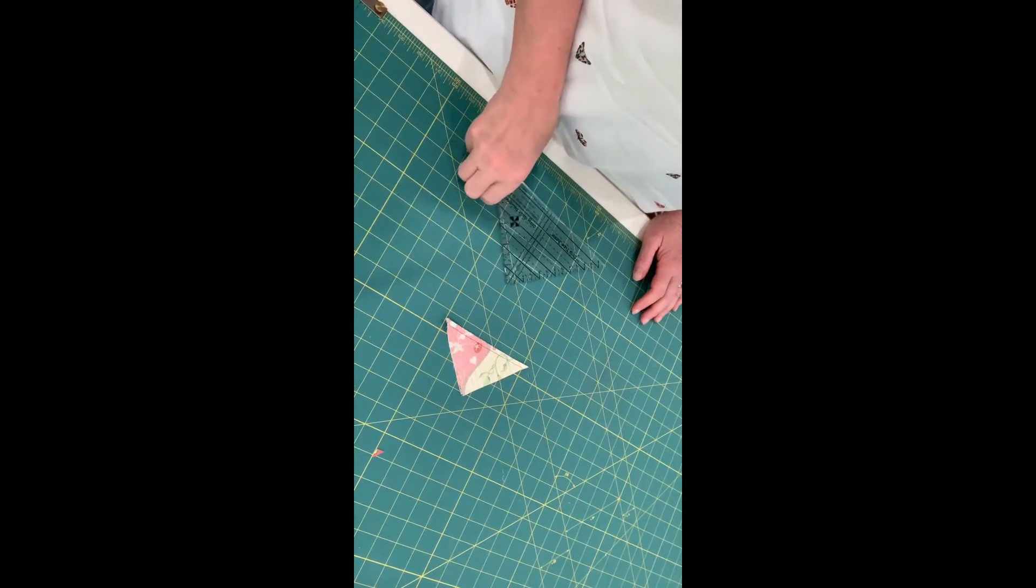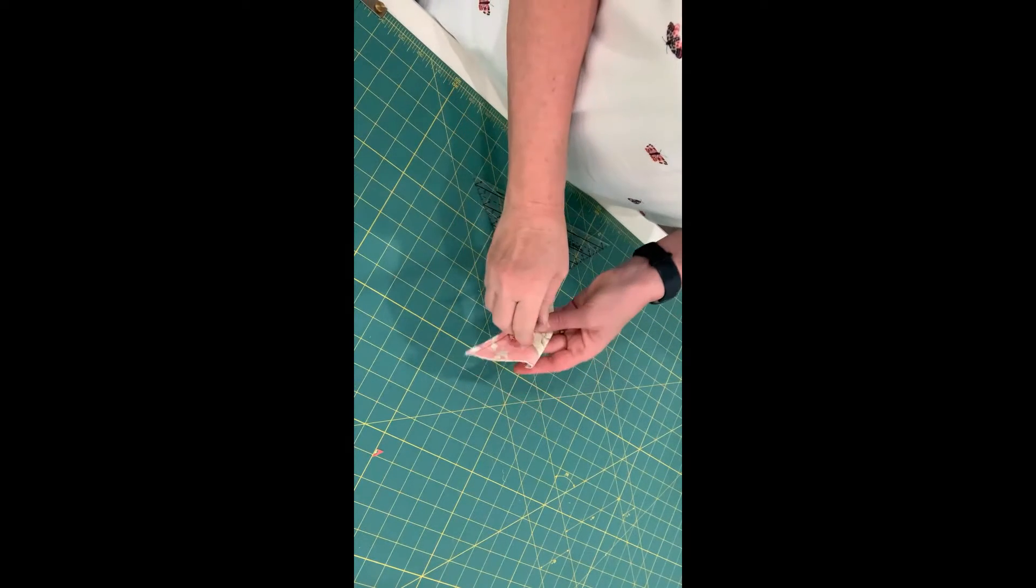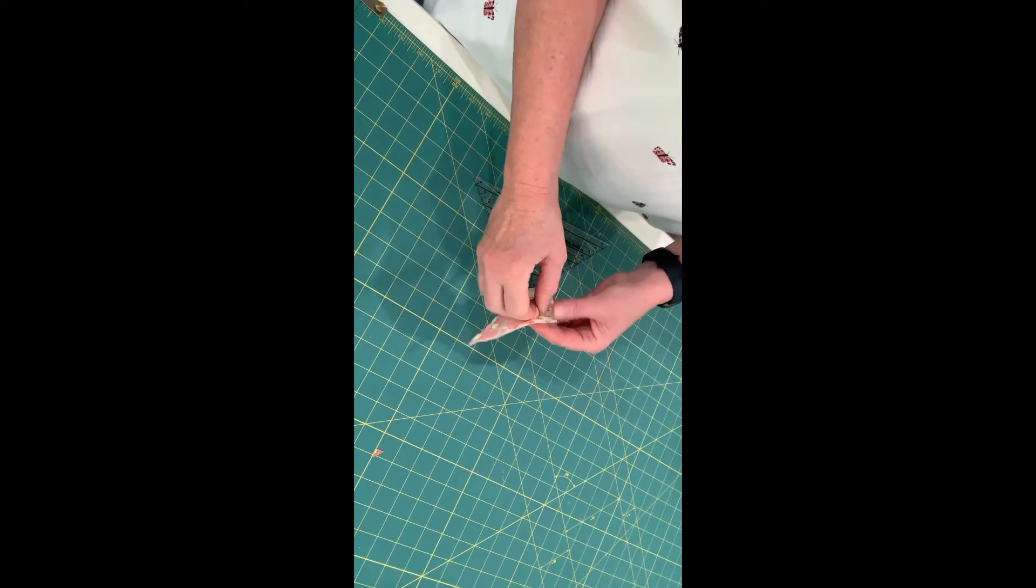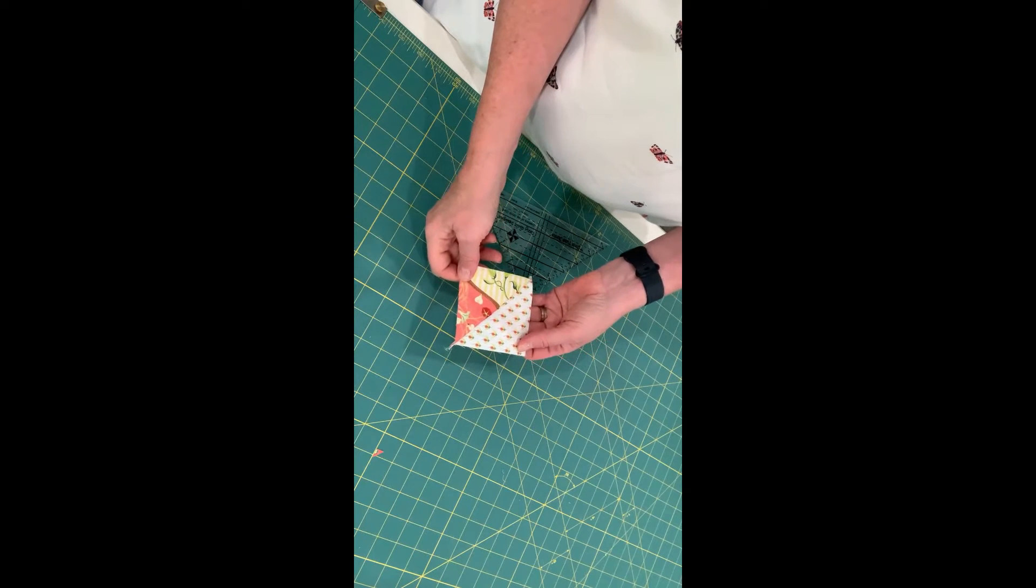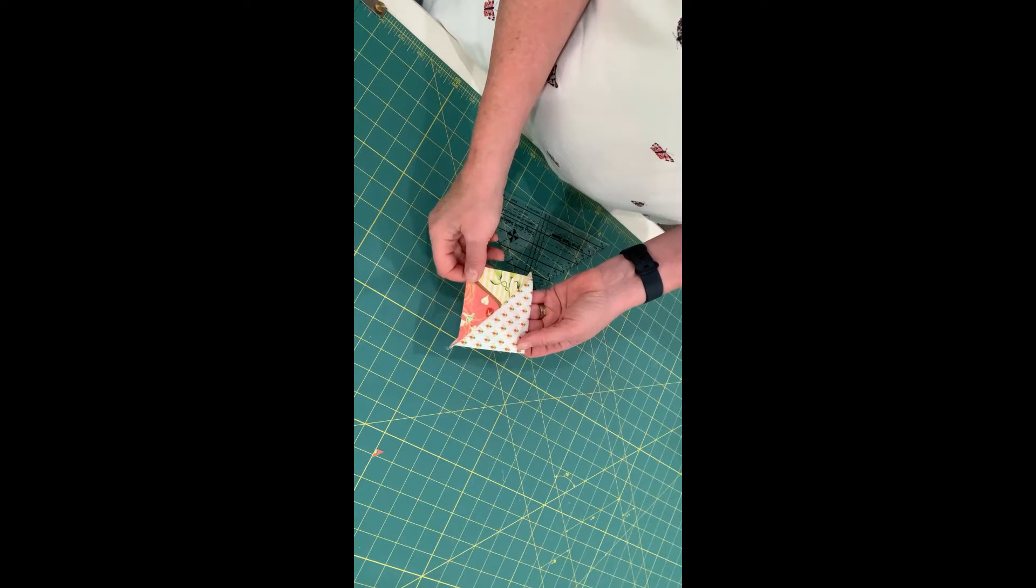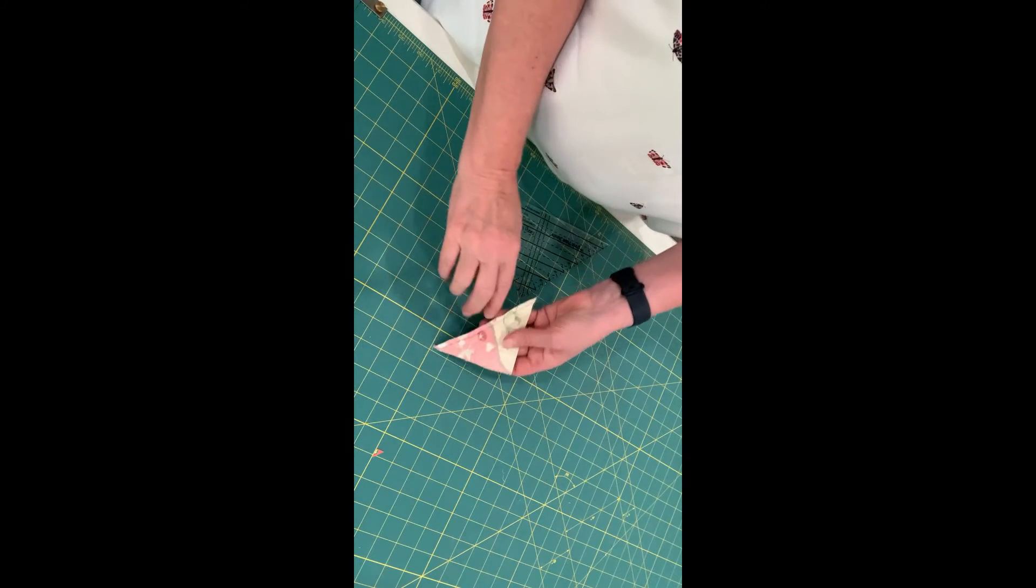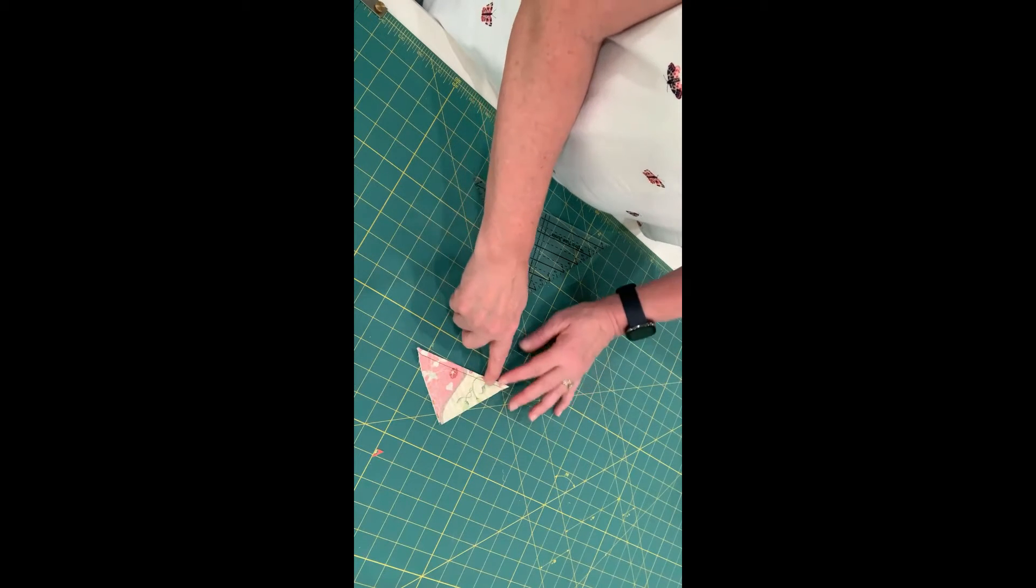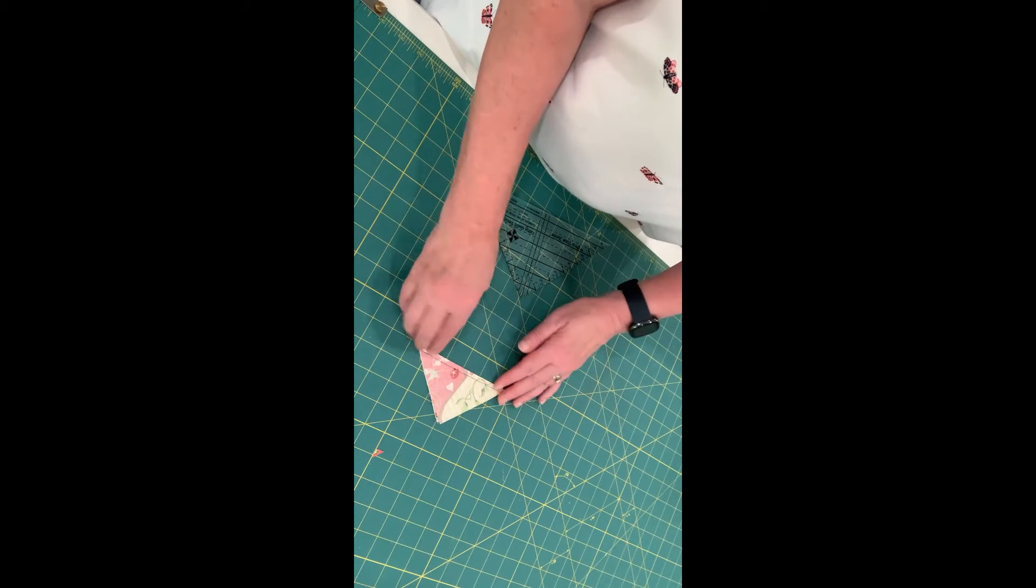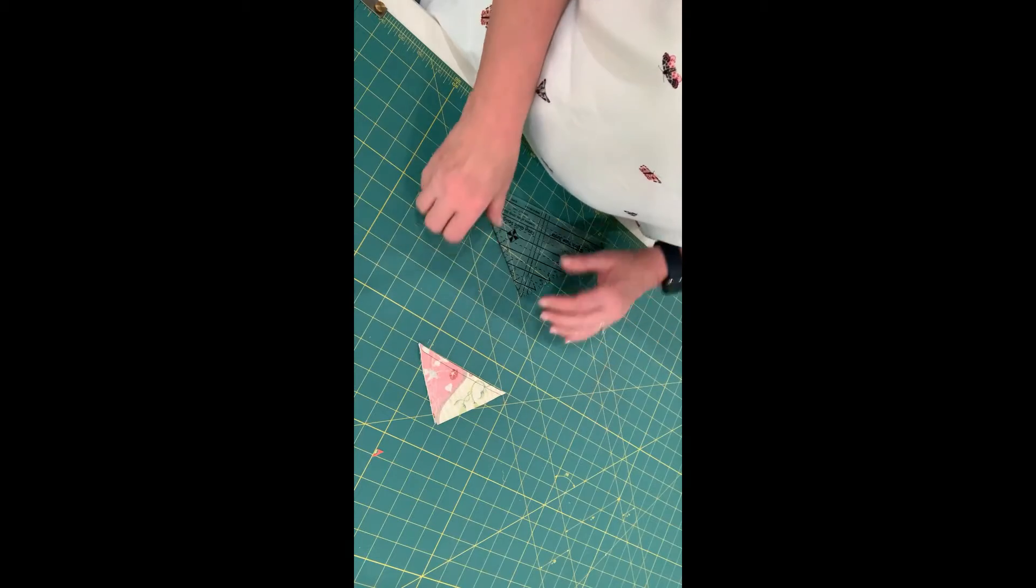Here I have a triangle square, which started out as 3 7⁄8 inch squares, layered on top of each other, line drawn, sewn on either side of the line, and then cut down the center just like we did for the layer cake squares.